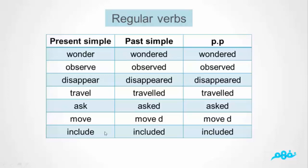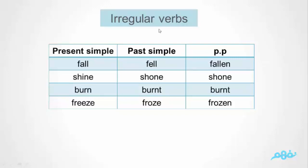And if the verb ends in E, we just add D. So: move — moved. Include — included. That's so simple. And we have the contrary — irregular verbs. With irregular verbs we don't add -ED. We just have two new verb forms that we have to memorize. Like: fall — fell — fallen. Shine — shone — shone. Burn — burned — burned. Freeze — froze — frozen. That's irregular verbs — we should keep them.